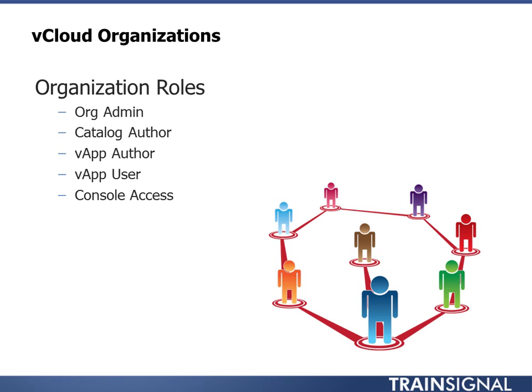A catalog author can work with the catalog — adding, removing, and modifying vApps to keep it current. vApp author and vApp user are similar, except the vApp author can create and deploy vApps, while the vApp user can only use ones already deployed. Console access is the lowest permission level — it allows opening the VMware console to a virtual machine. Don't confuse this with RDP or web services against the VM; those work regardless. Console access specifically restricts access to the VMware console itself.